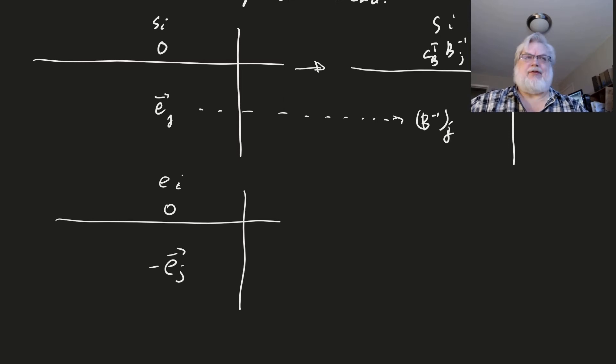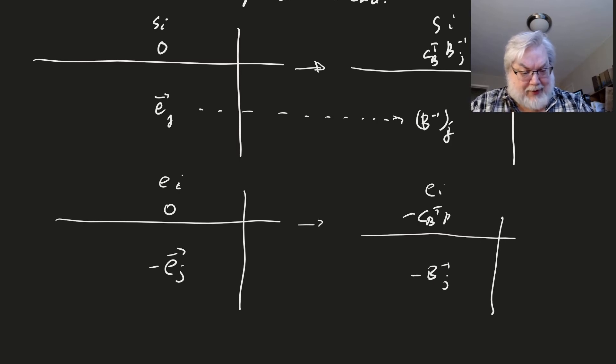And so if you look at the optimal tableau in that case, then you're just going to have minus B inverse, the J-th column. And then in place of the EI, we're going to have minus CB transpose B inverse J. And so YJ is the negative of this, right?